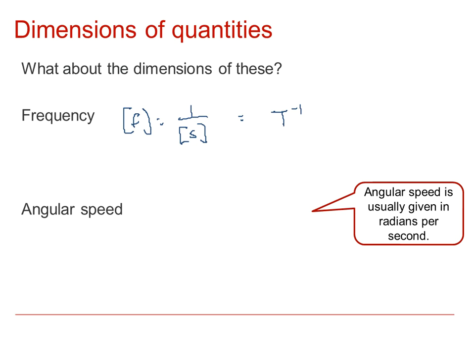For angular speed, angular speed is radians per second. Radians is just counting and doesn't have dimensions. So again, we've got per second, so the dimensions of angular speed will also be T to the minus one.